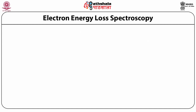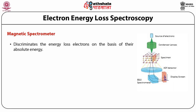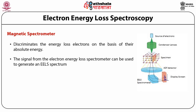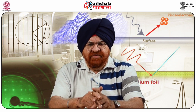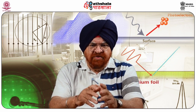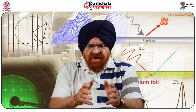The magnetic spectrometer, indicated in the diagram, discriminates energy loss electrons on the basis of their absolute energy. The signal from the electron energy loss spectrophotometer can be used to generate an EELS spectrum, and the spectrometer can also be used to produce a compositional map. HREELS is a very good analytical technique — it helps in quantitative analysis and analyzes the inelastic scattering suffered by the transmitted electron beam, giving structural and chemical information.